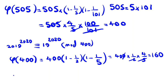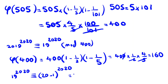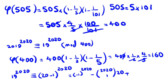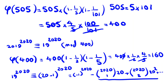Write 19^2020 = (20 - 1)^2020. By binomial expansion this equals (-1)^2020 + C(2020,1)×(-1)^2019 × 20 + C(2020,2) × 20^2 + higher terms. The term with 20^2 and all higher terms are multiples of 400. The term with 20 alone is a multiple of 20 but combined with (-1)^2019 × 20, all such terms are multiples of 400. So 19^2020 ≡ 1 mod 400.